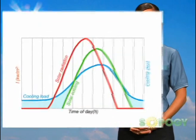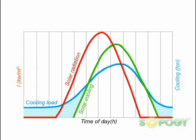As demonstrated in this graph, solar air conditioning is an ideal renewable energy solution as there is a direct correlation between solar radiation and cooling load demand.